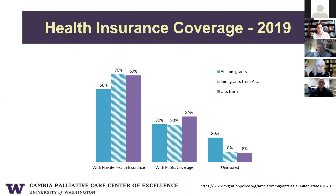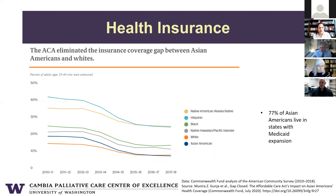Turning to health insurance coverage — here we see a somewhat different story. Immigrants from Asia have high rates of health insurance coverage compared to immigrants from other parts of the world, with 70% of Asian immigrants having private health insurance. This translates to relatively low uninsurance rates — 8% of Asian immigrants are uninsured, mirroring the U.S.-born population, and much lower than the 20% we see for immigrants from other parts of the world. The ACA actually eliminated the insurance coverage gap between Asian Americans and whites.